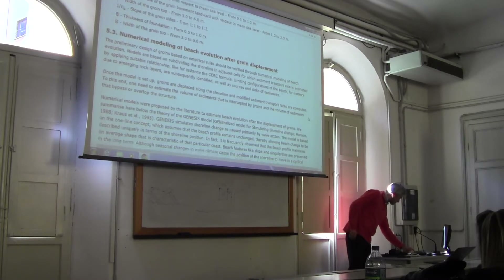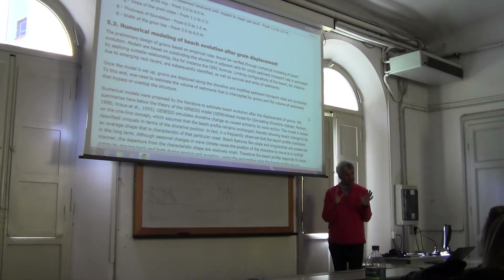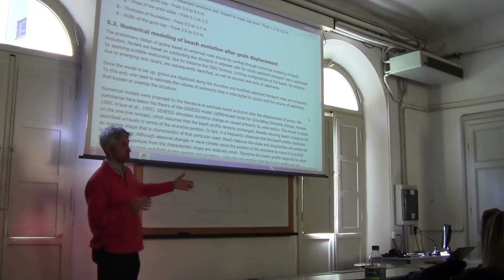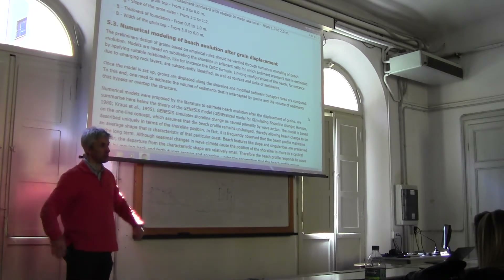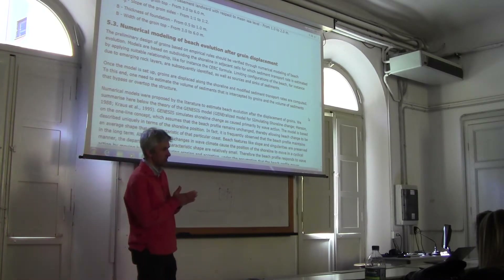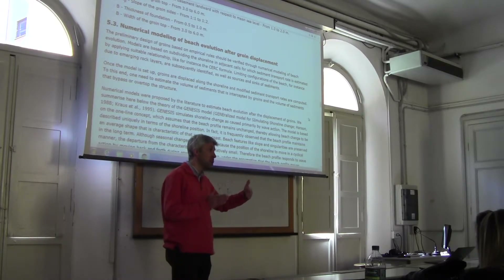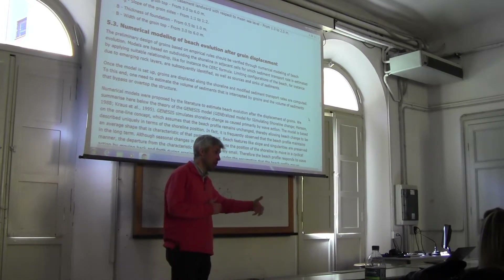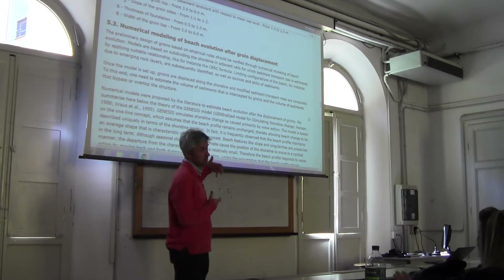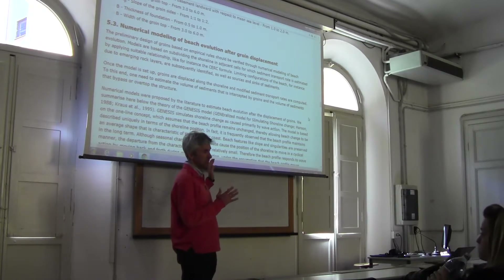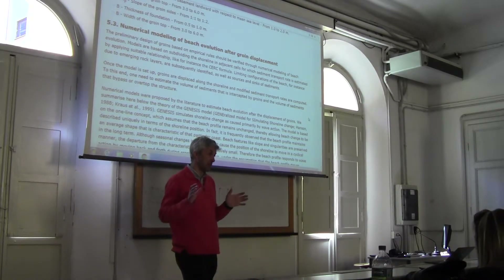Now let's talk about numerical modeling. So far we talked about empirical design, which allowed us to define the number of groins, the gaps, the width of the top of the groin, and other parameters. I mentioned at the beginning of this lecture that the ideal thing is to make a preliminary empirical design and then verify if this preliminary design conforms to the physical basis of the process. The most useful thing is to make a comparison with a modeling result.